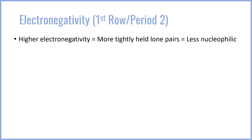The first major factor which impacts nucleophilicity is the electronegativity of the given element. This specifically applies to first-row or period two non-metals — C, N, O, and F. The higher the electronegativity of the element, the more tightly held its lone pairs are, the more stable they are on that atom, and as a result, those lone pairs are less available and the atom is less nucleophilic.